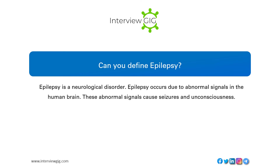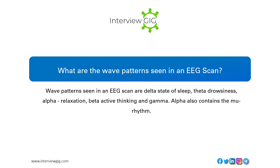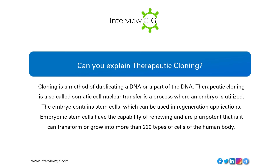Epilepsy is a neurological disorder that occurs due to abnormal signals in the human brain, causing seizures and unconsciousness. Wave patterns seen in an EEG scan include delta (state of sleep), theta (drowsiness), alpha (relaxation), beta (active thinking), and gamma. Alpha also contains the mu rhythm.